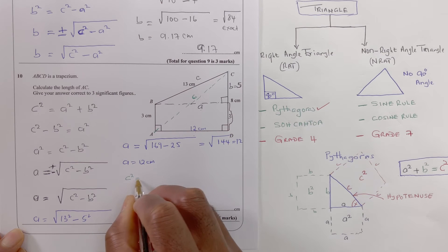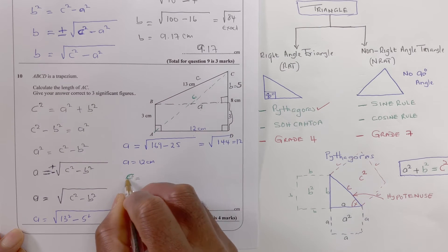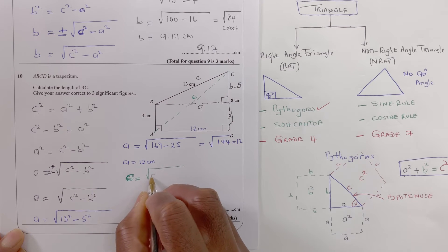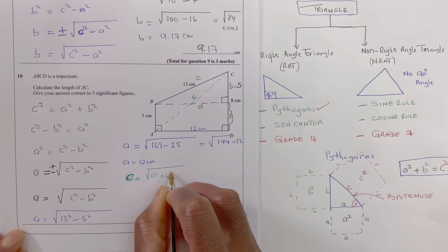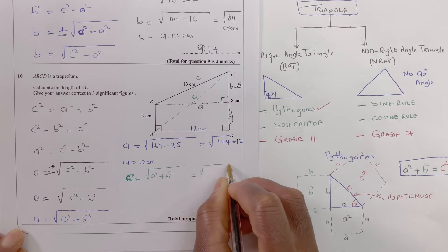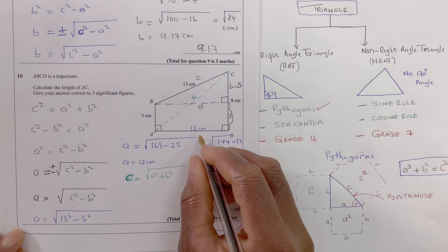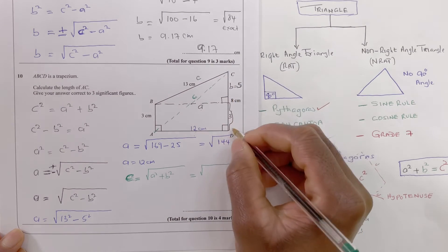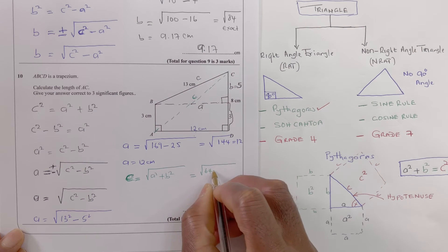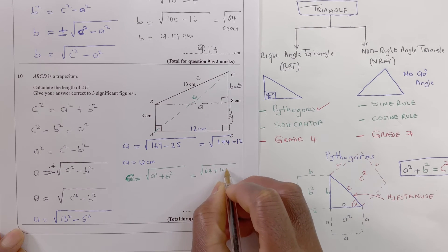Well I could go straight into the formula by saying c equals root a squared plus b squared. So I know what I'm doing now. So that would be root, now this is 8 squared and 12 squared, so that's 64 plus 144.